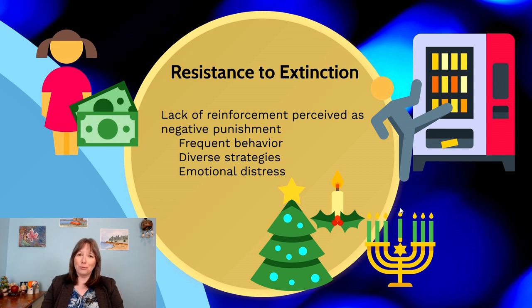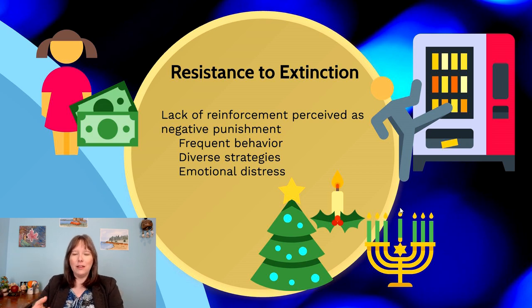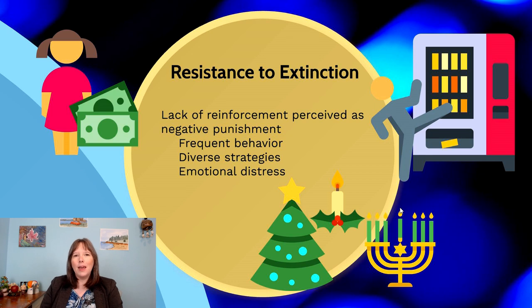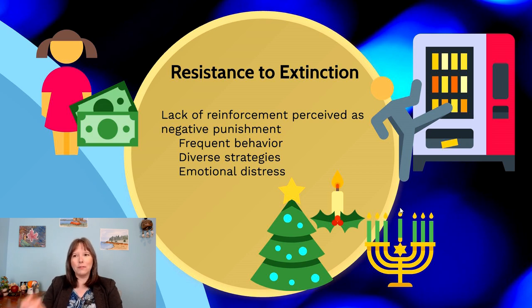Vending machines are prone to fail occasionally, but if you know a reliable machine that always works, and one day it takes your money but doesn't dispense your food, how will you feel? You expect to be reinforced for your behavior — insert money, press button — but it's not giving you the consequence you've been conditioned to expect. So you might enter resistance to extinction.